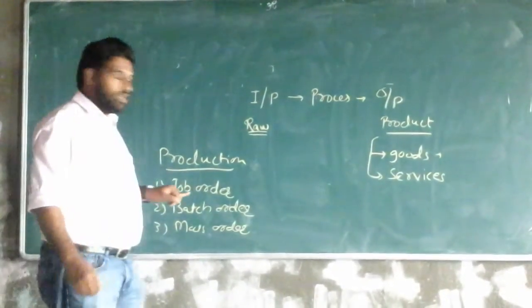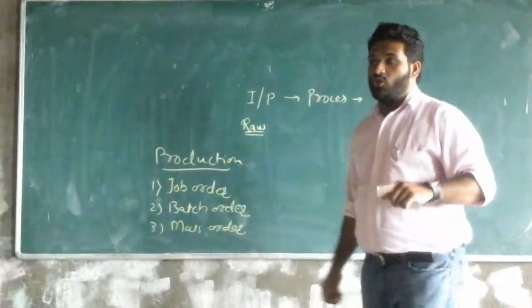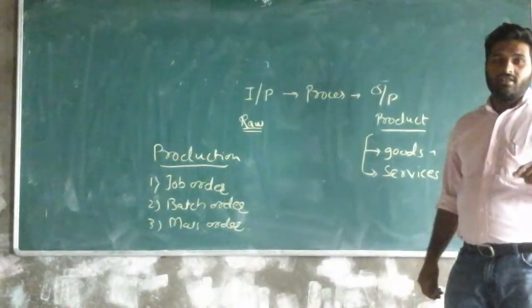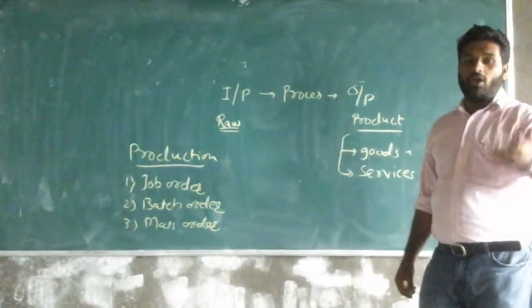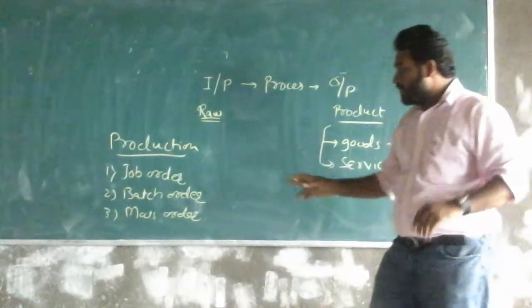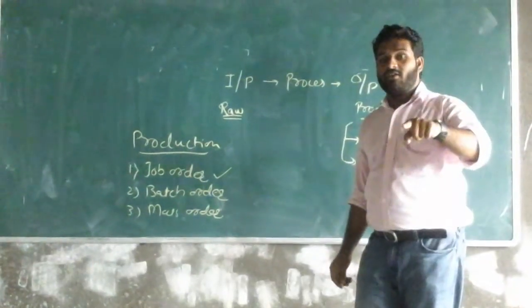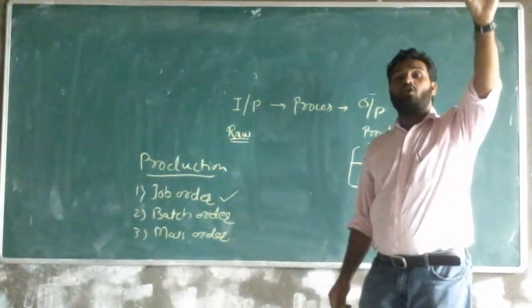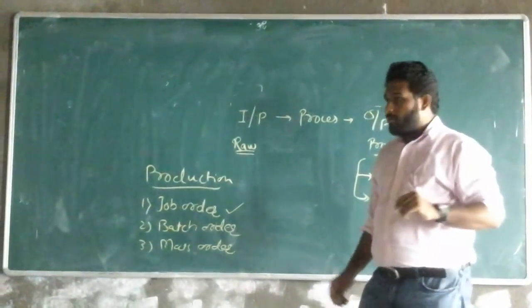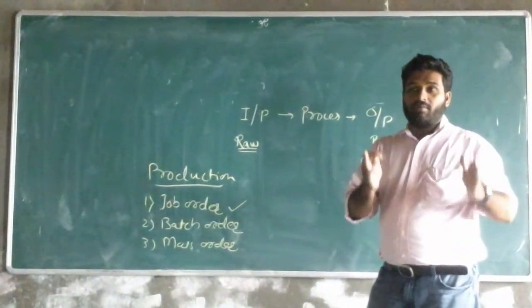In job order production industry, the product which is produced is unique. Means whenever we produce the product, this is unique. The feature is unique. Means once we produce the job, it will not be repeated for very very long duration of time. Means job is unique.